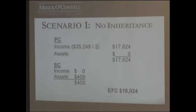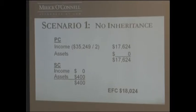So in the first scenario, they did not receive any inheritance. The parents have $100,000 in income. In the formula, the federal formula considers just over $35,000 from the income that can be applied and used for education. Because they have two kids in the family going to college at the same time, that gets divided up, so only $17,624 is considered for each child.